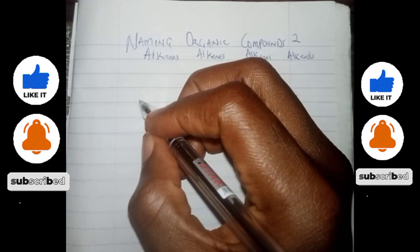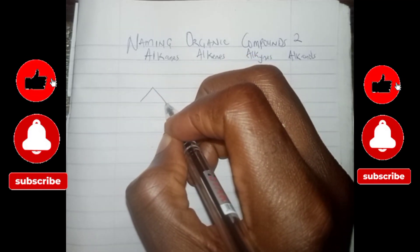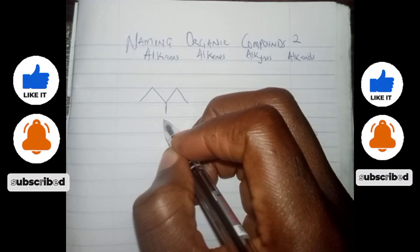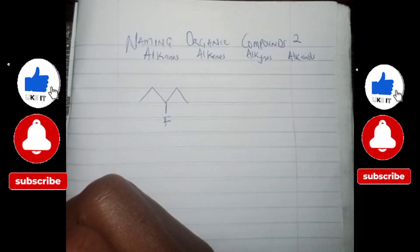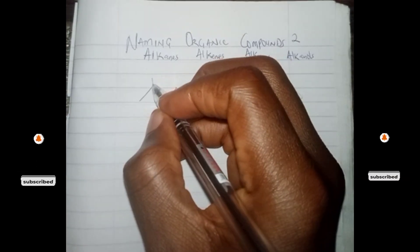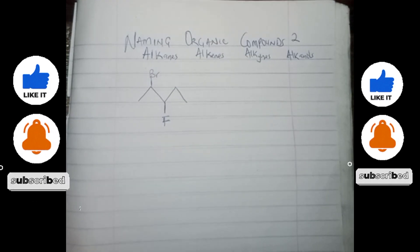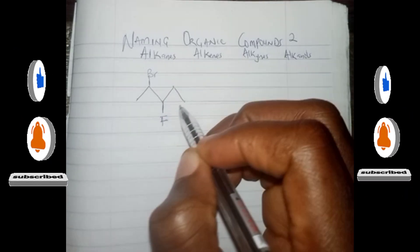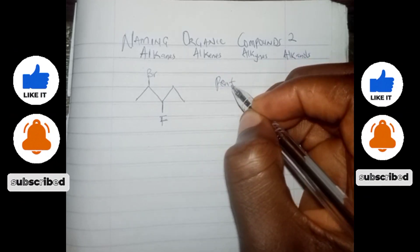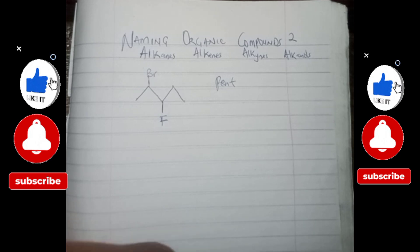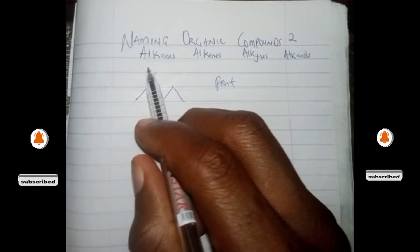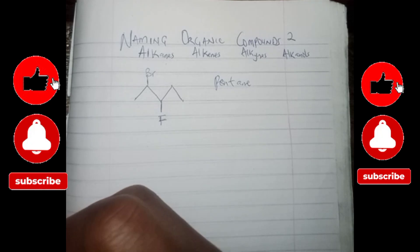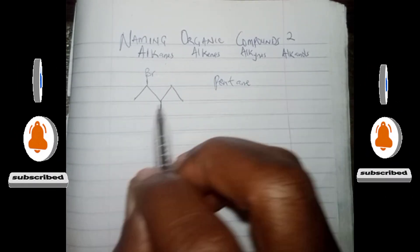I'm not going to do any further explanation — we'll just continue with more examples. If you need the basics, I've already done that in Part 1. So let's try out more examples. Let's say we have a structure here with fluorine. The most important thing is to count the carbons: one, two, three, four, five — that means it's going to be pent-. Alkanes have single bonds all through, so since I have just single bonds, it's going to be pentane.